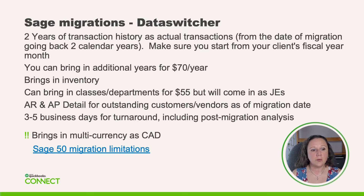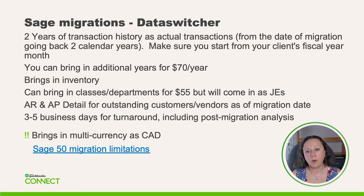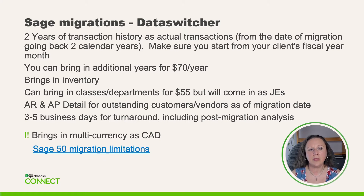Be sure that you start with the first month of your client's fiscal year. You can bring in additional years at an additional cost. So if the books are messy and or behind — maybe they stopped at 2018 and we're now in 2021 — you can go back to 2019. If you need to go back to 2018, 2017, or 2016, you can pay to get those years in there.